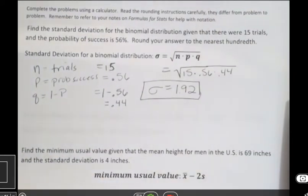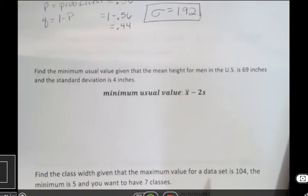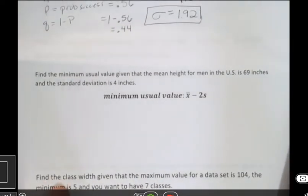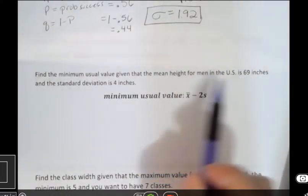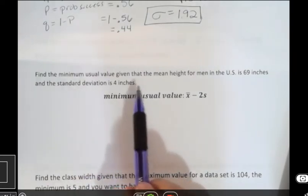All right. The next one is just an easier formula, actually, minimum usual value. They're asking you to find the minimum usual value given that the mean height for men in the U.S. is 69 inches, and the standard deviation is 4 inches.